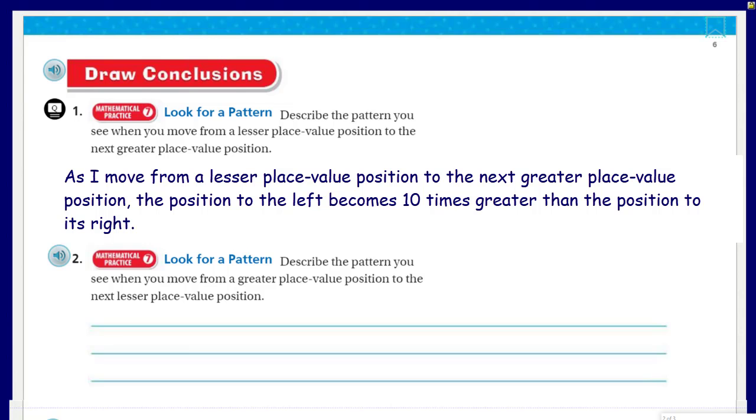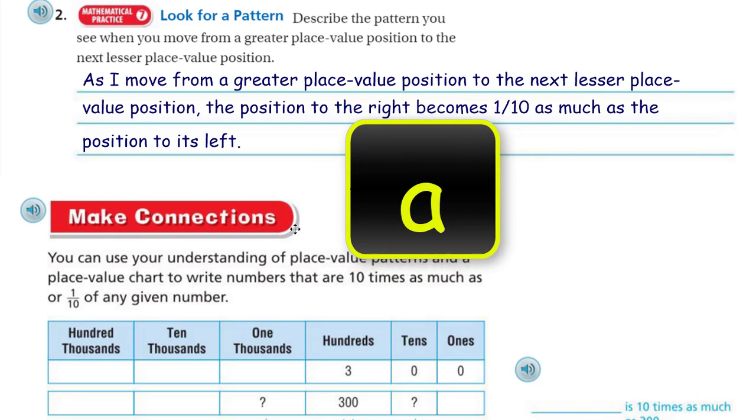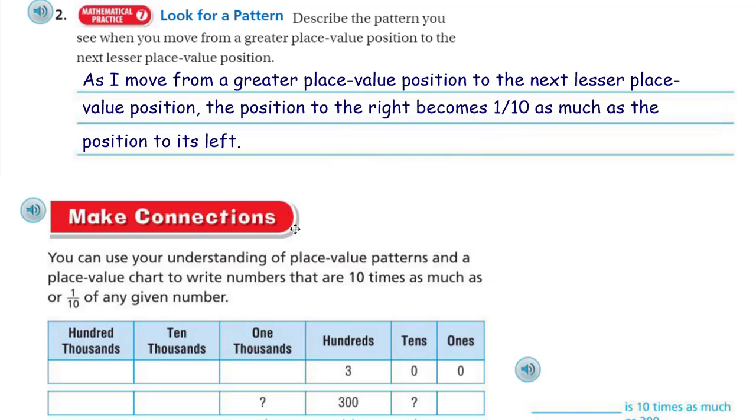Now let's go ahead and move on to question number two. Again, look for a pattern. We're using mathematical practice 7 which talks about structure and pattern. Describe the pattern you see when you move from a greater place value position to the next lesser place value position. I would think to myself we're doing the opposite now. We're moving to the right not to the left. As we move from a greater place value position to the left, then we're actually learning that the position to the right is only 1/10 of value to the position to its left. It's 1/10 as much as that place value to the left or to the greater place value.